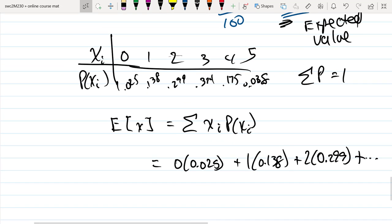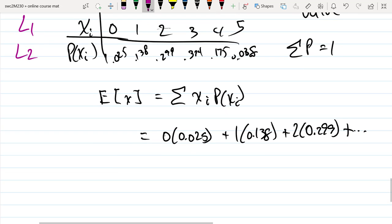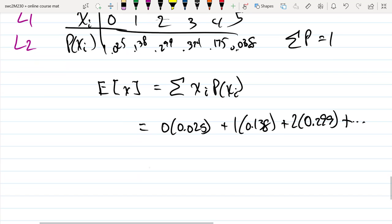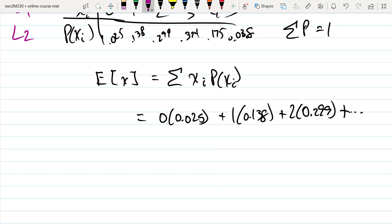We could also put each one of those sets into two different lists, and one of our stats will do this work for us, where it multiplies the zero times the 0.025, the one times the 0.138. So that would be one-var stats.